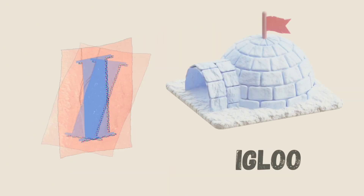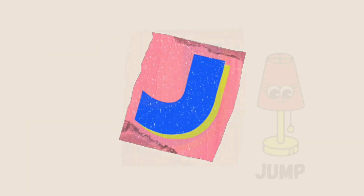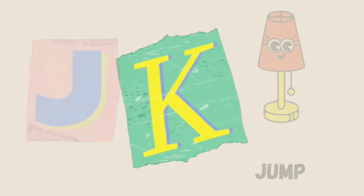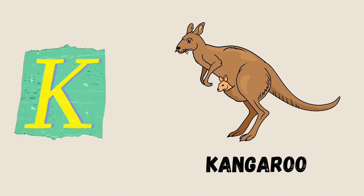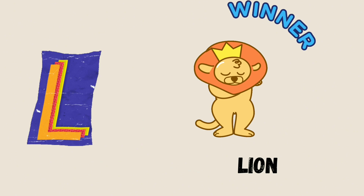I is for Igloo, I-I-Igloo. J is for Jump, J-J-Jump. K is for Kangaroo, K-K-Kangaroo. L is for Lion, L-L-Lion.